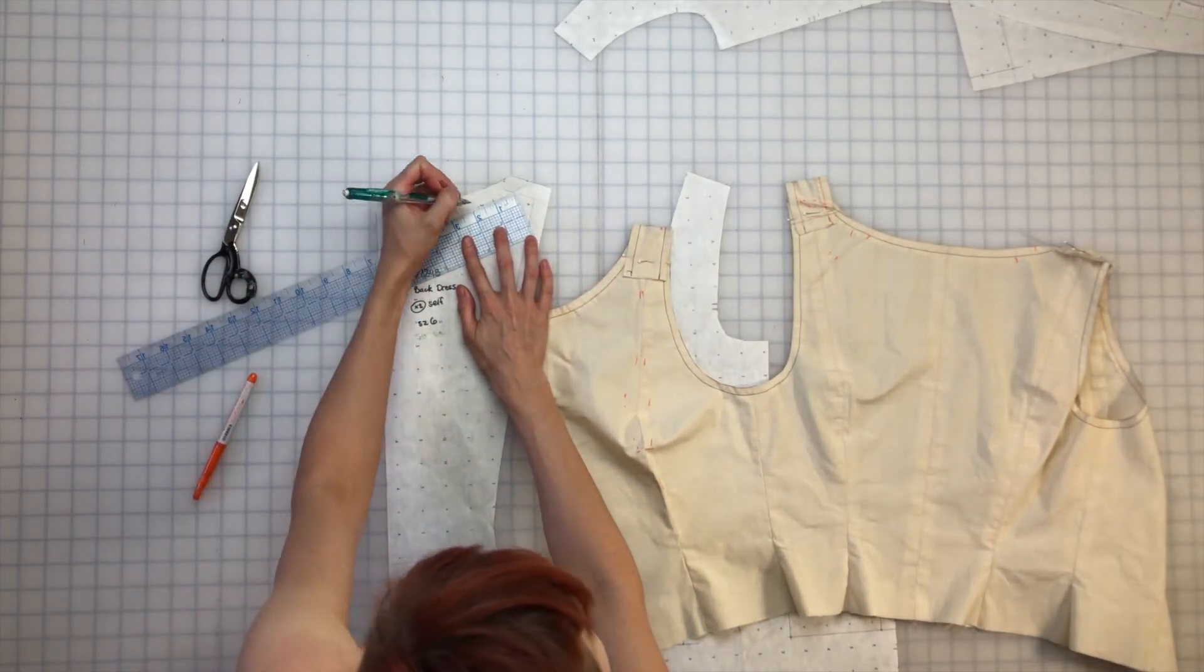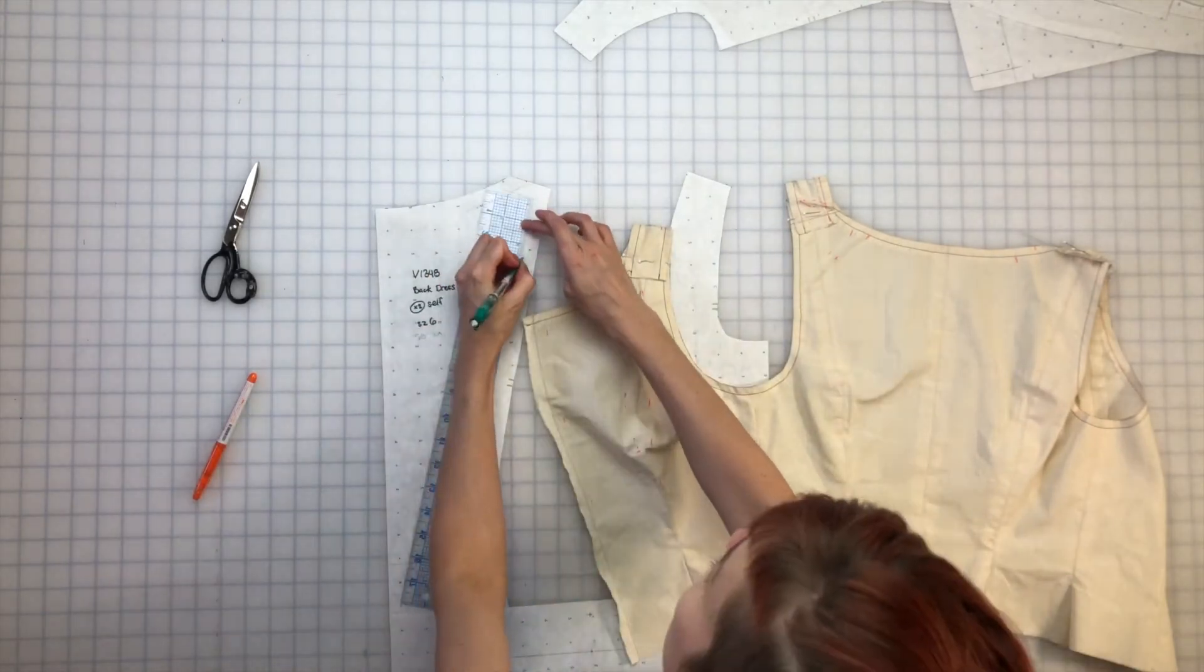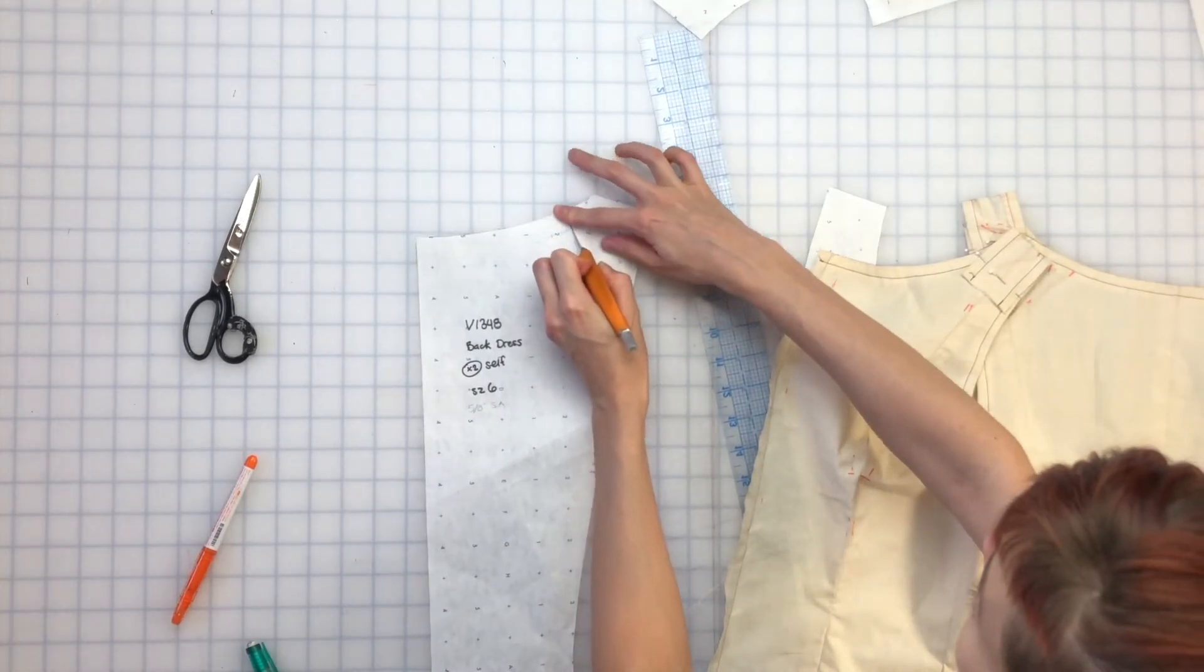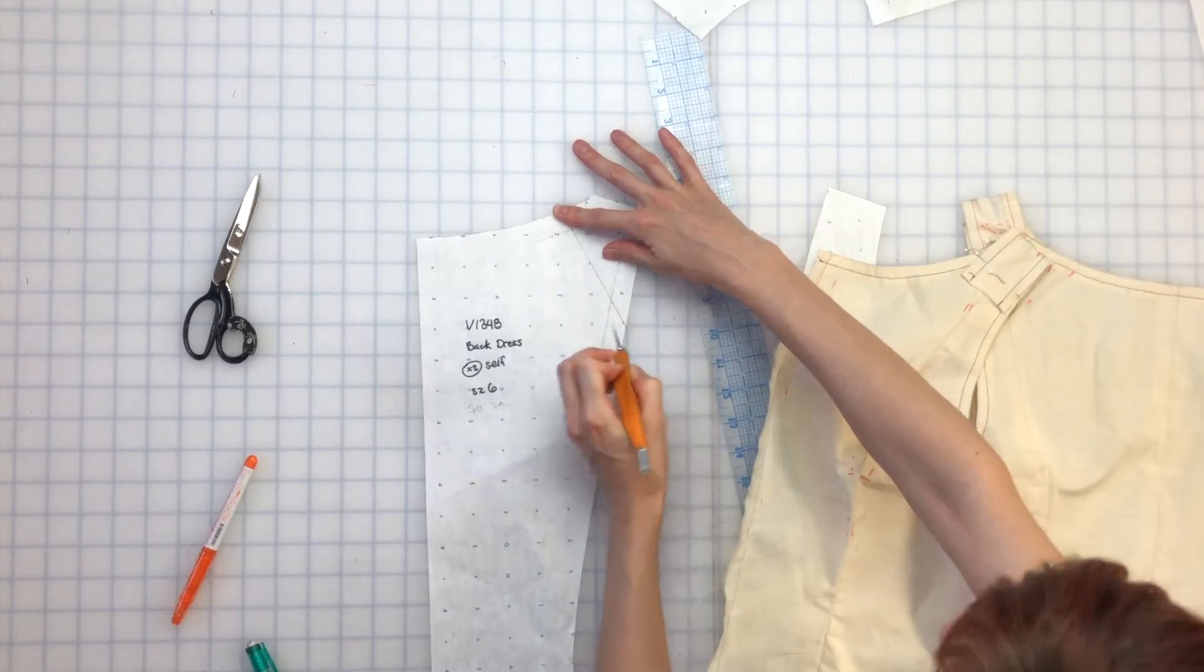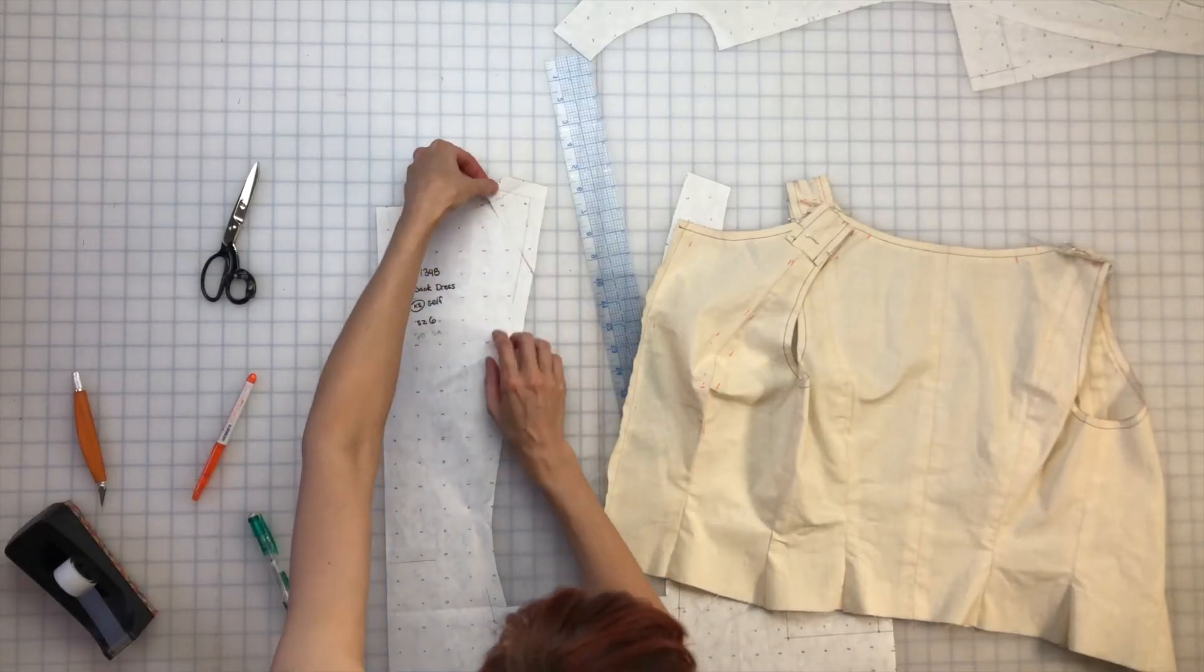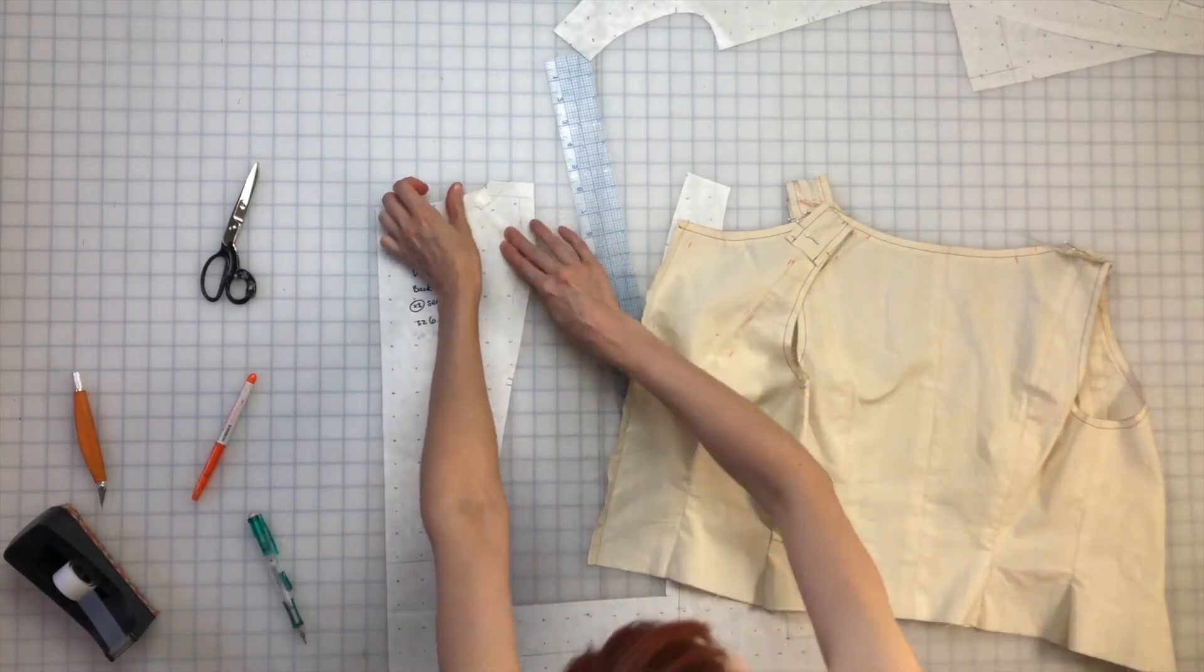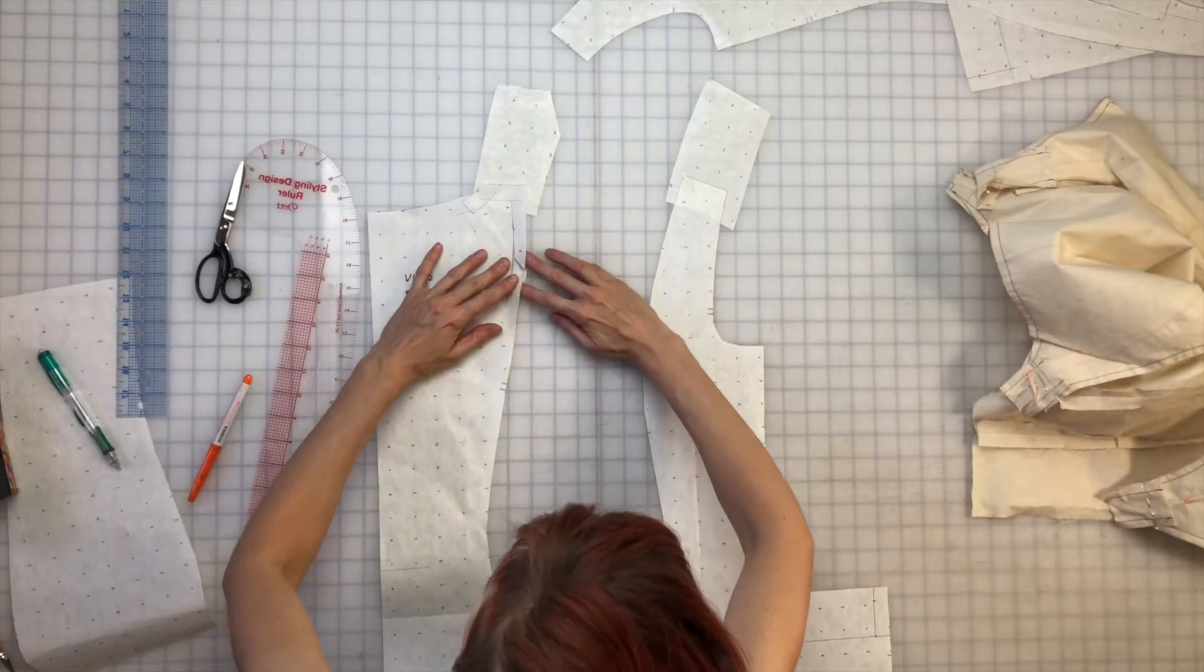I pinched out 3/4 inch at the back neck so I'm marking that on my pattern and drawing a line where I can cut. I cut just up to the stitch line then continue the line in the seam allowance so there's just a little bit of paper holding the pattern together at that pivot point. Then you can close up that 3/4 inch that was gaping and tape it back together. Then blend the lines. Add paper if you need to fill in the seam allowance anywhere.